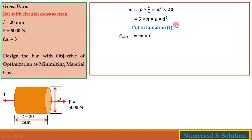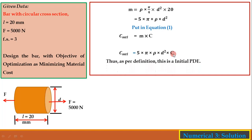So the initial PDE is: C_mtl = 5πρd²C. This is the initial primary design equation, and it always expresses the objective of optimum design. The objective is minimization of material cost, and hence this PDE expresses the equation of material cost.